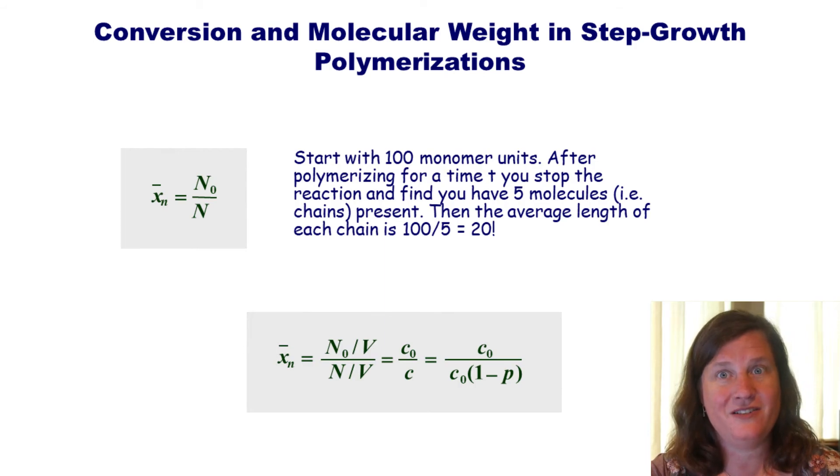I just want to remind you, you might be thinking one over one minus P is familiar. Hopefully, you remember that the number average degree of polymerization for step growth polymerization, number average degree of polymerization, equals one over one minus P. And we derived that expression earlier in this semester. So, if you don't remember, go back and take a look in that molecular weight and comparison of step and chain growth polymerizations.